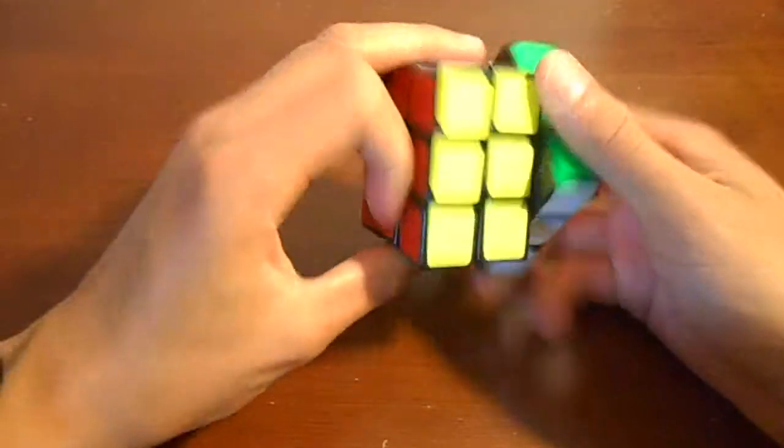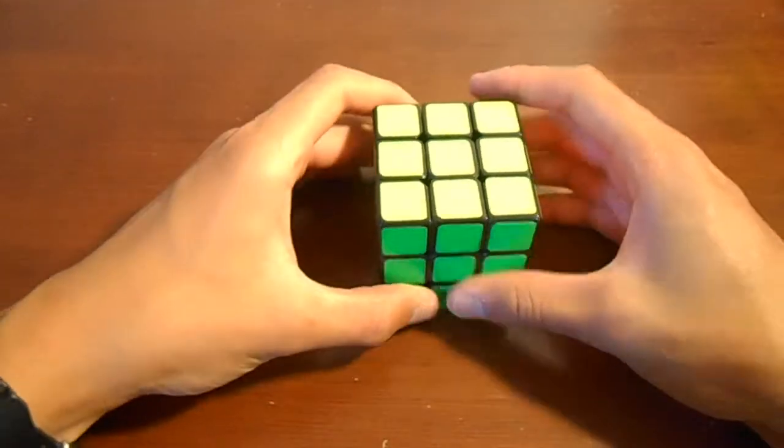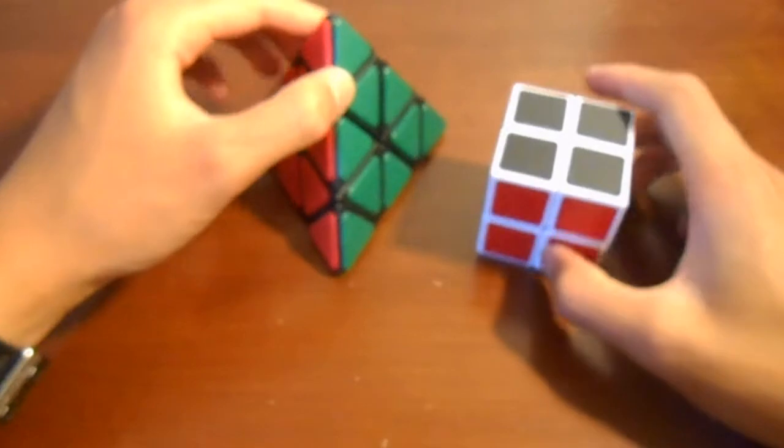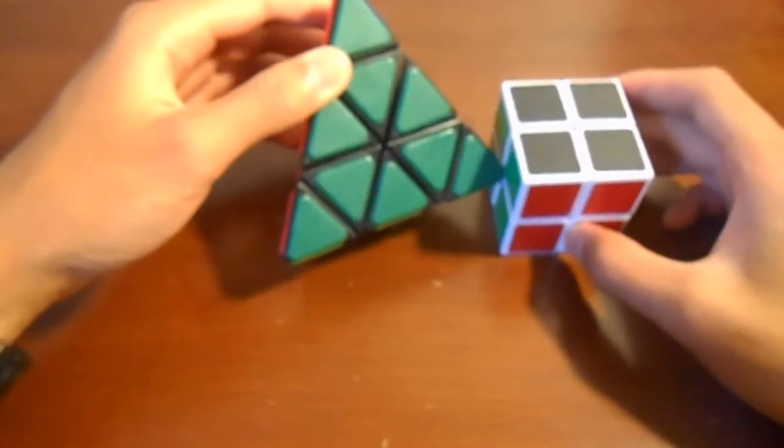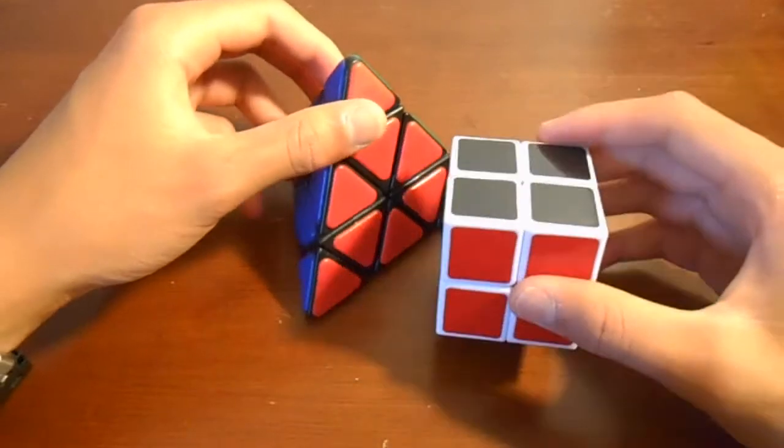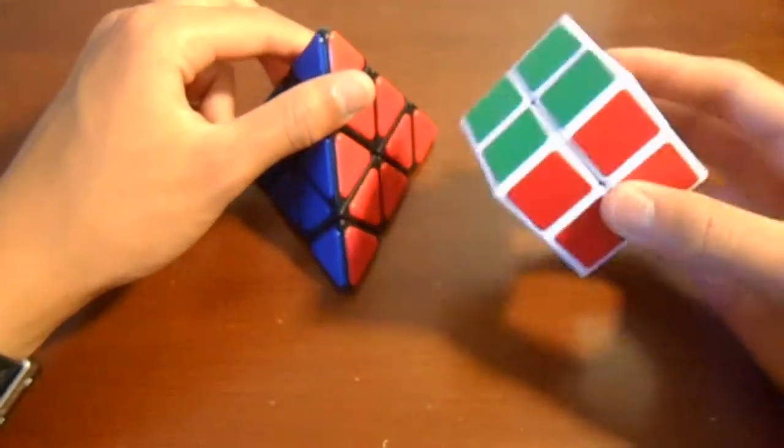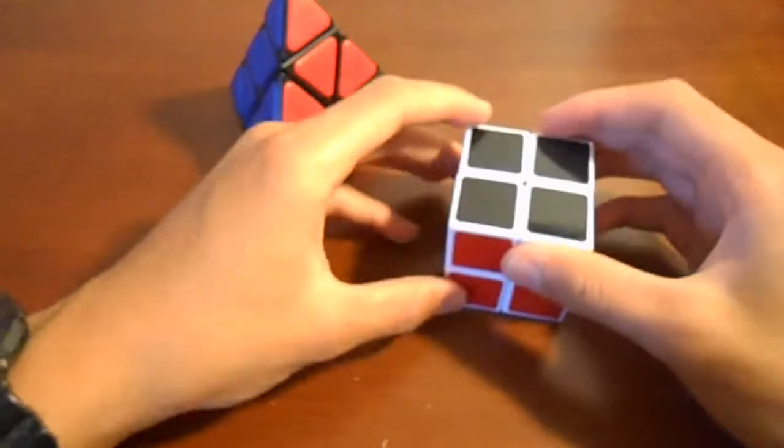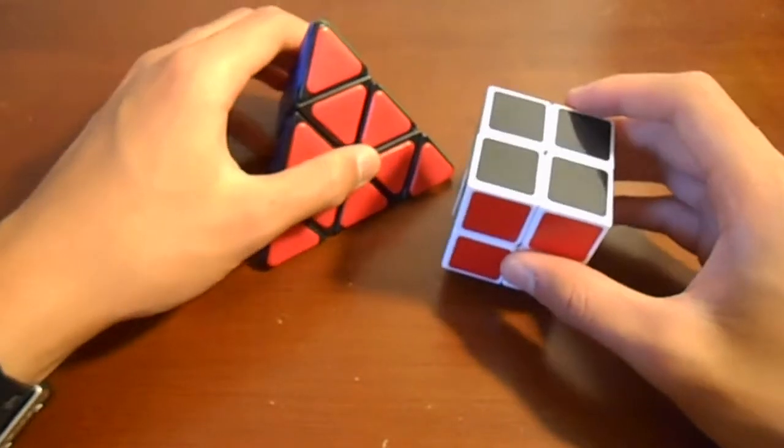So another reason why you should use normal scrambles. Also on things like pyraminx and 2x2, if they have a generated random scramble, they're usually less than 10 moves. So I mean it's probably even faster than hand scrambling.